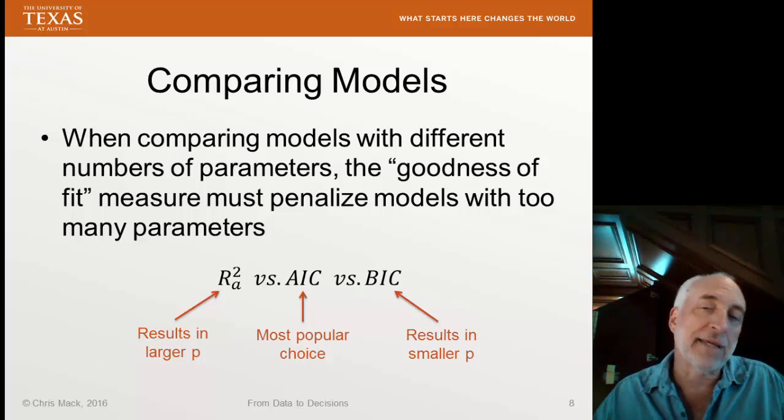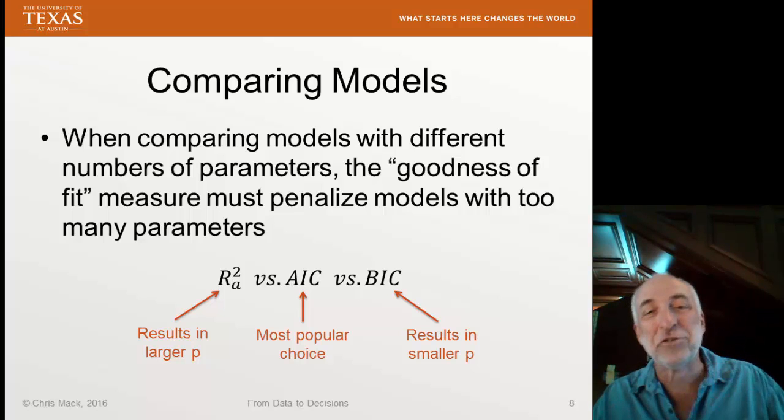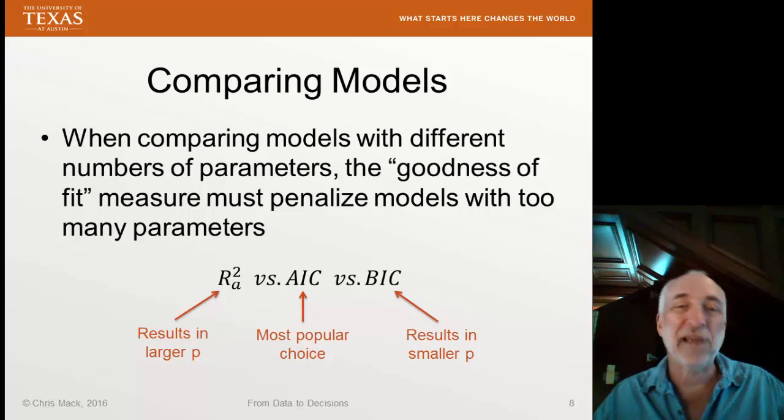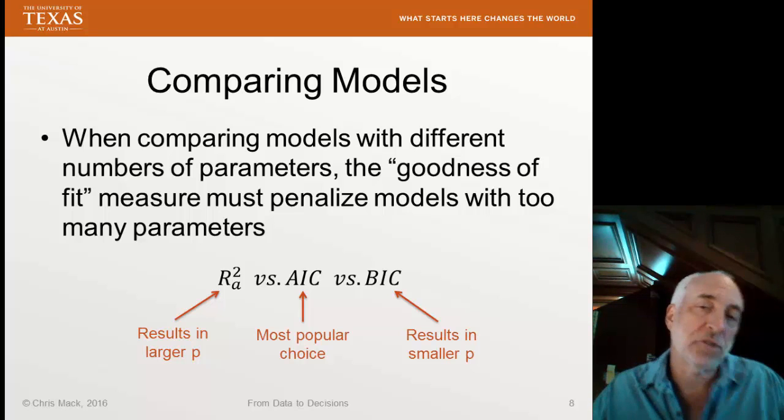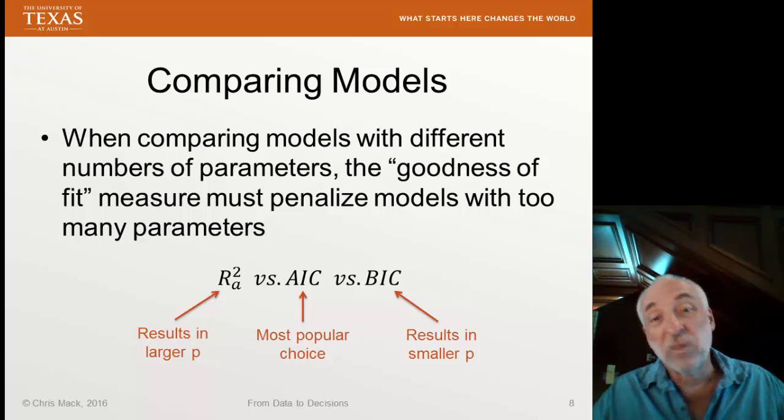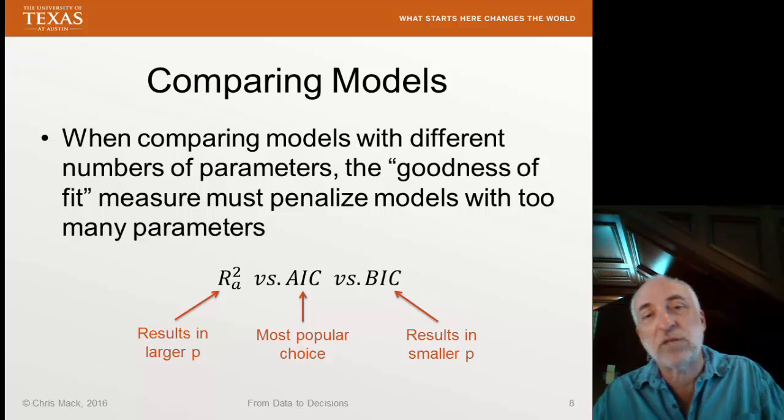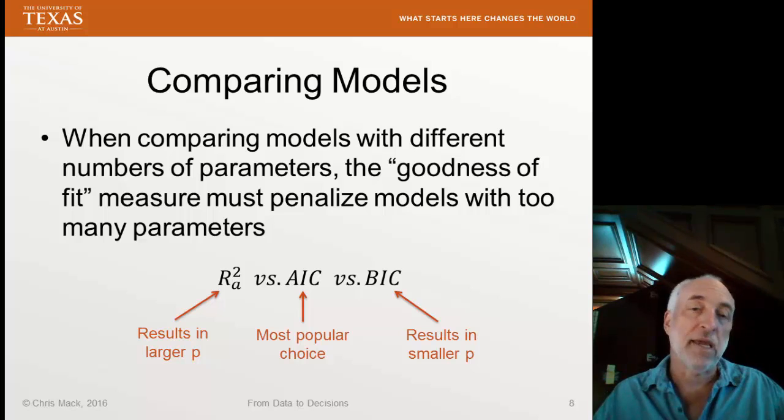I tend to like parsimony, so I either use the AIC or the BIC when trying to decide. But what I generally do is calculate all three every time. Sometimes they all agree. All say this is the best model. When that happens, then of course you don't have to worry about it too much. When they disagree, then you have to decide whether you want to emphasize parsimony or not. And there's no right answer. There's no way of saying this is a better model because it depends on what you mean by better.